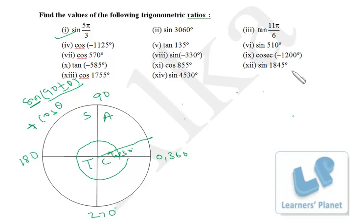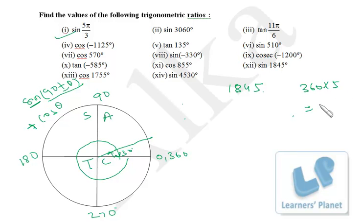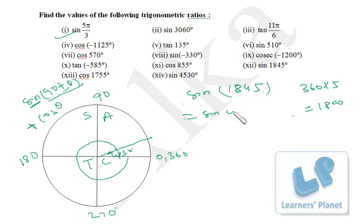Now let's see sine 1845°. From 1845, deduct as many 360°s as possible. 360 × 5 = 1800, so five circles are completed. We are left with 45°. So sine 1845° = sine 45° = 1/√2. Just a one-step solution!